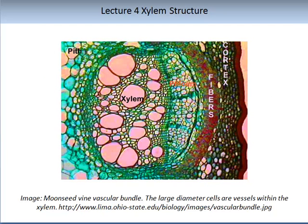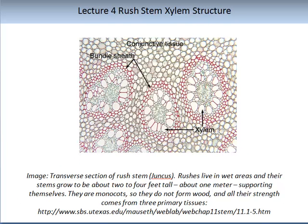This image shows the monocot vine vascular bundles, where the large diameters are vessels within the xylem. You can see the xylem and phloem structures, the pith, fibres and cortex. In your DIY practical on form and function, you will learn that monocots and dicots not only have different root compositions but can also exhibit different xylem structures. This is a transverse section of a rush stem. Rushes live in wet areas, grow to about 2 to 4 feet tall, and are able to support themselves well. They are monocots and do not form wood — all of their strength comes from three primary tissues: the bundle sheath, the connective tissue and the xylem tissue.